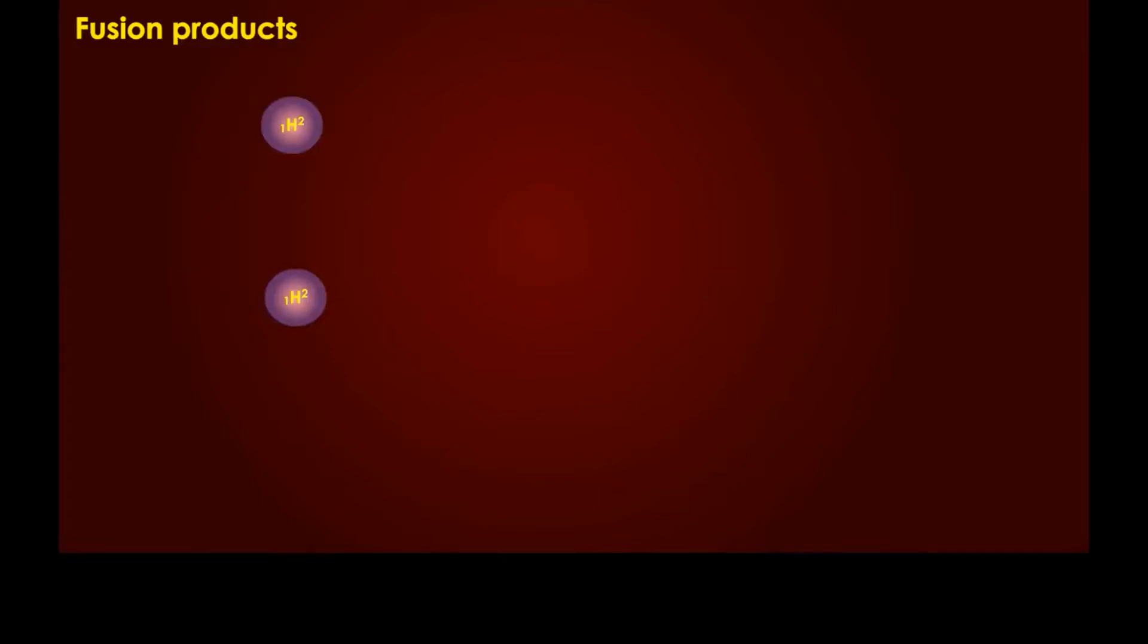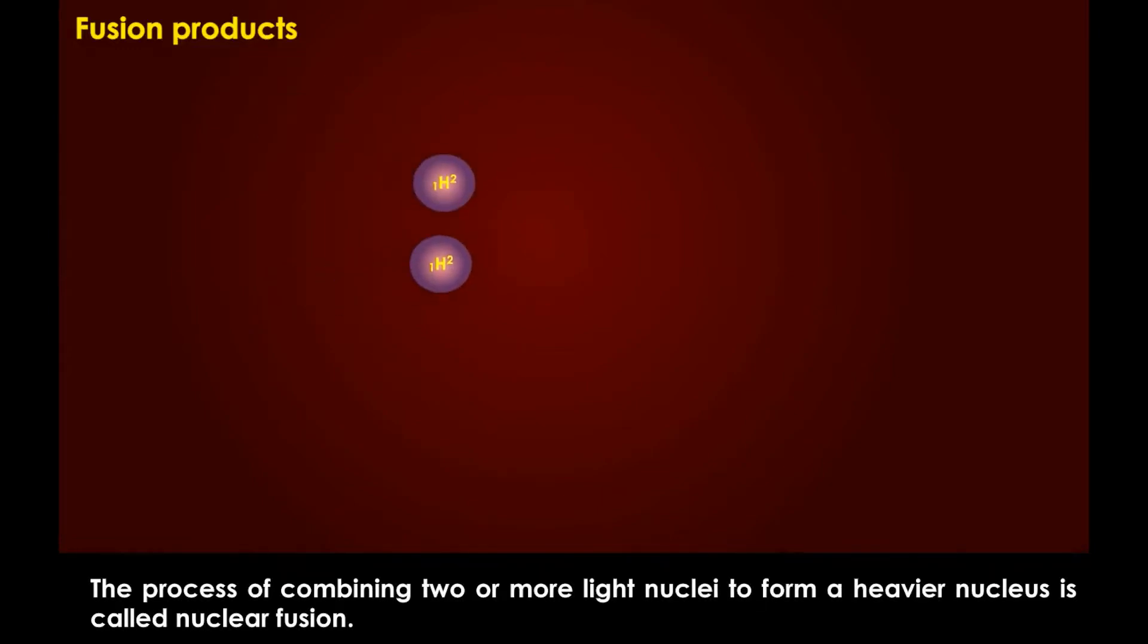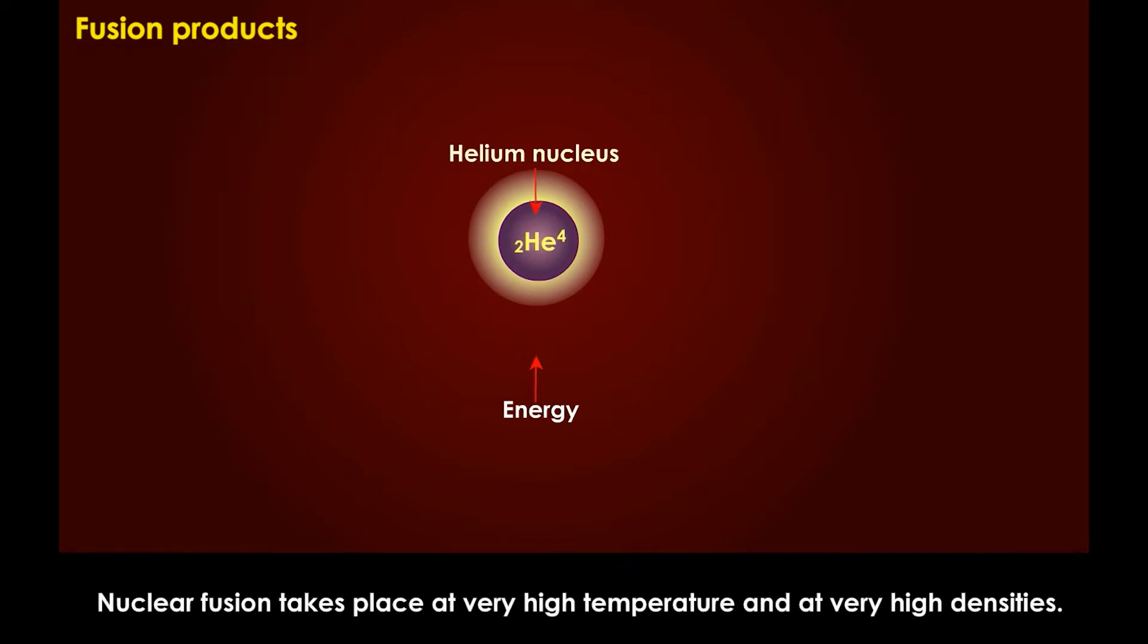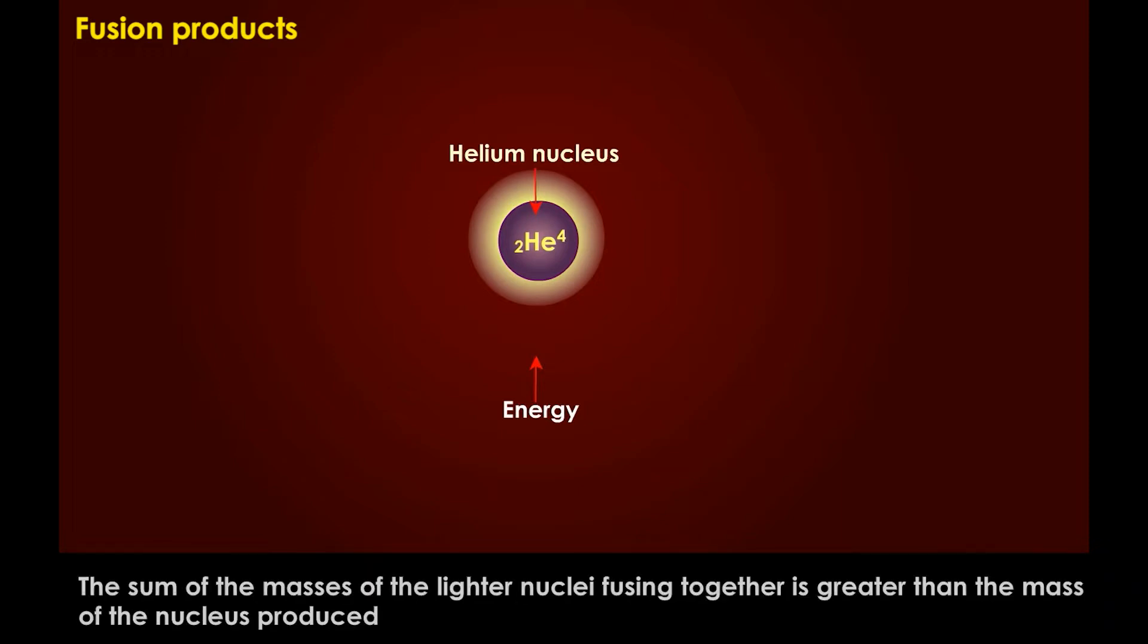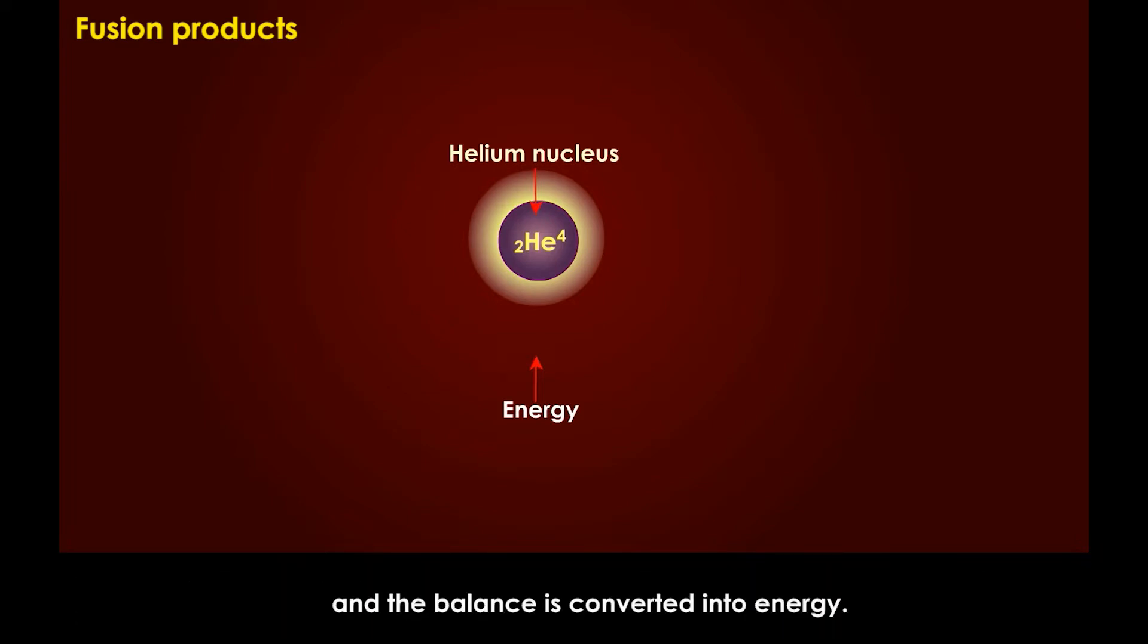Fusion Products. The process of combining two or more light nuclei to form a heavier nucleus is called nuclear fusion. Nuclear fusion takes place at very high temperature and at very high densities. The sum of the masses of the lighter nuclei fusing together is greater than the mass of the nucleus produced and the balance is converted into energy.